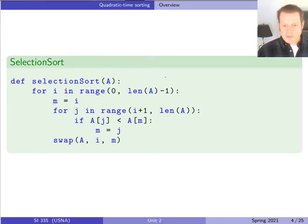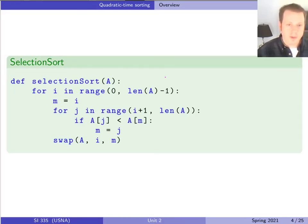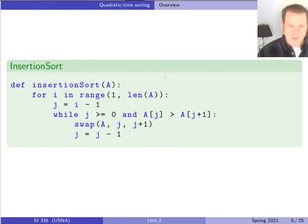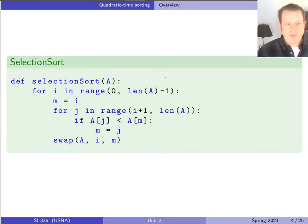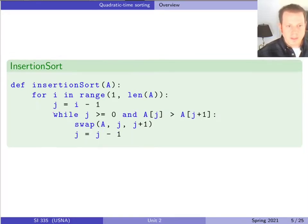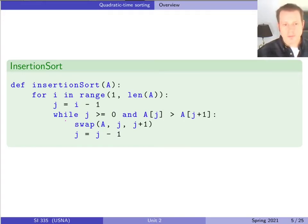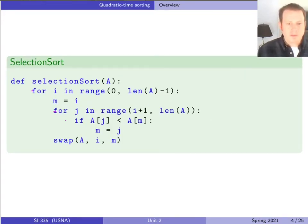So first, to start out, we're going to look at two sorting algorithms: selection sort and insertion sort. Here's the Python code for both of these. What you should notice first of all is that they both have two nested loops — two nested for loops in selection sort, and a nested for and a while loop in insertion sort. These are kind of similar, but they have some important differences.